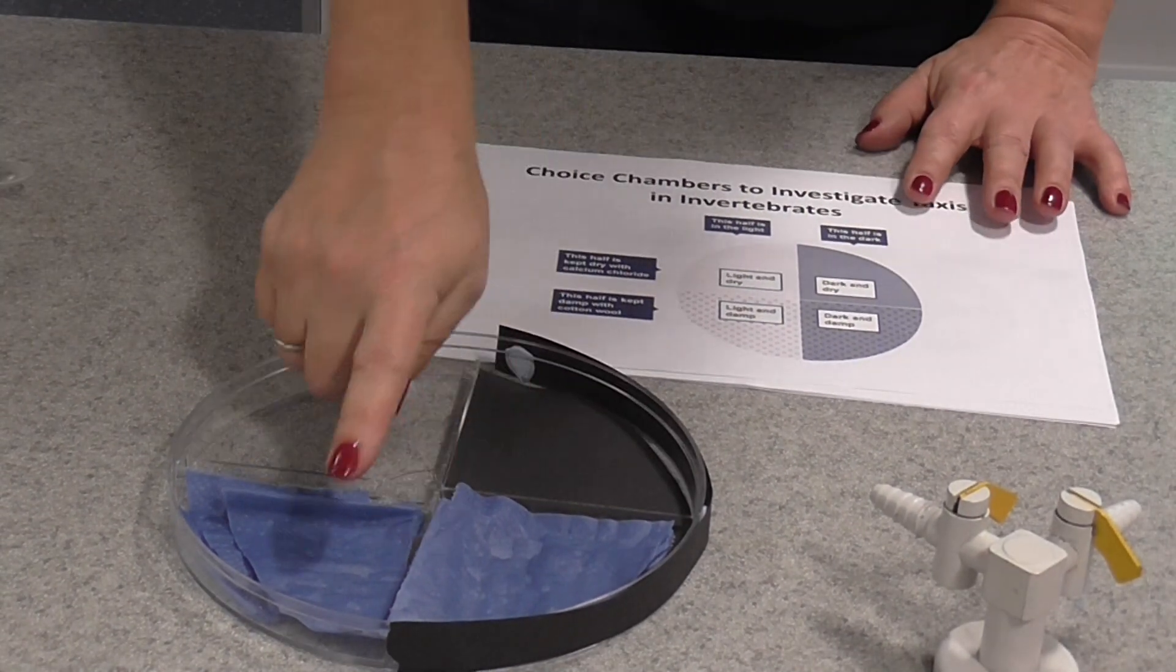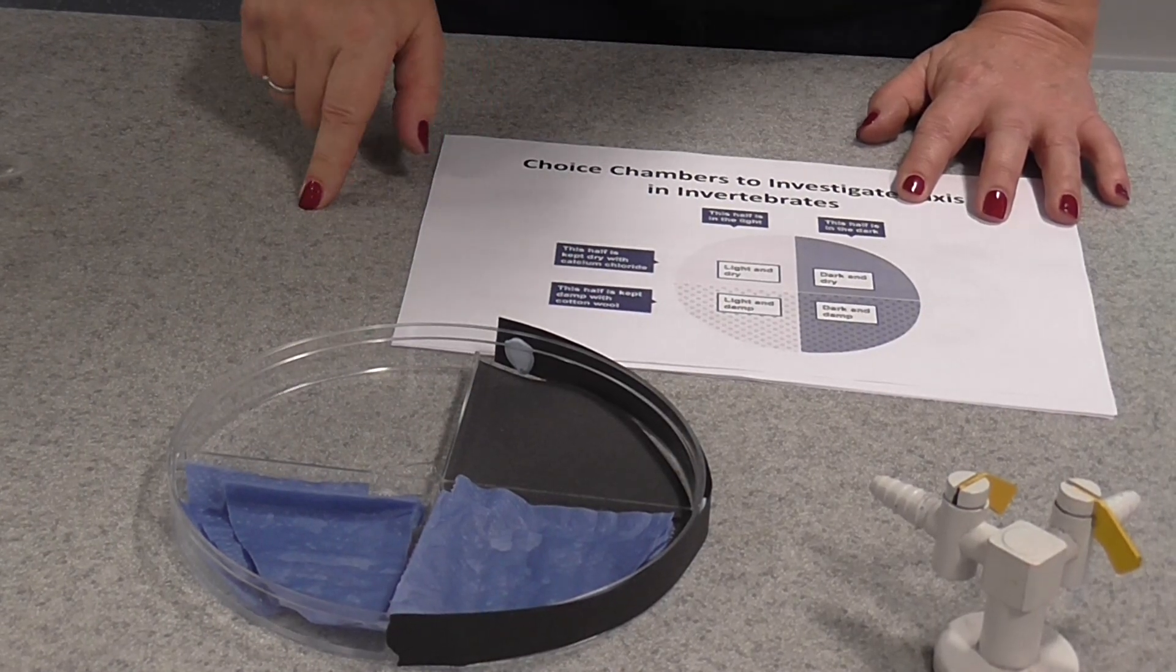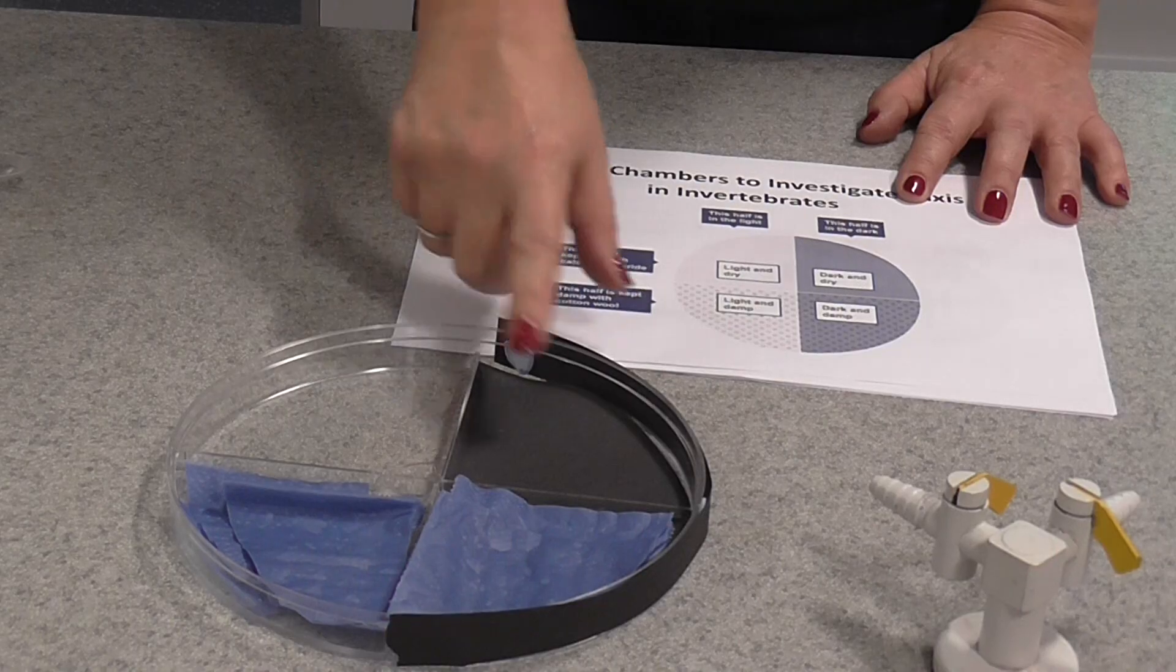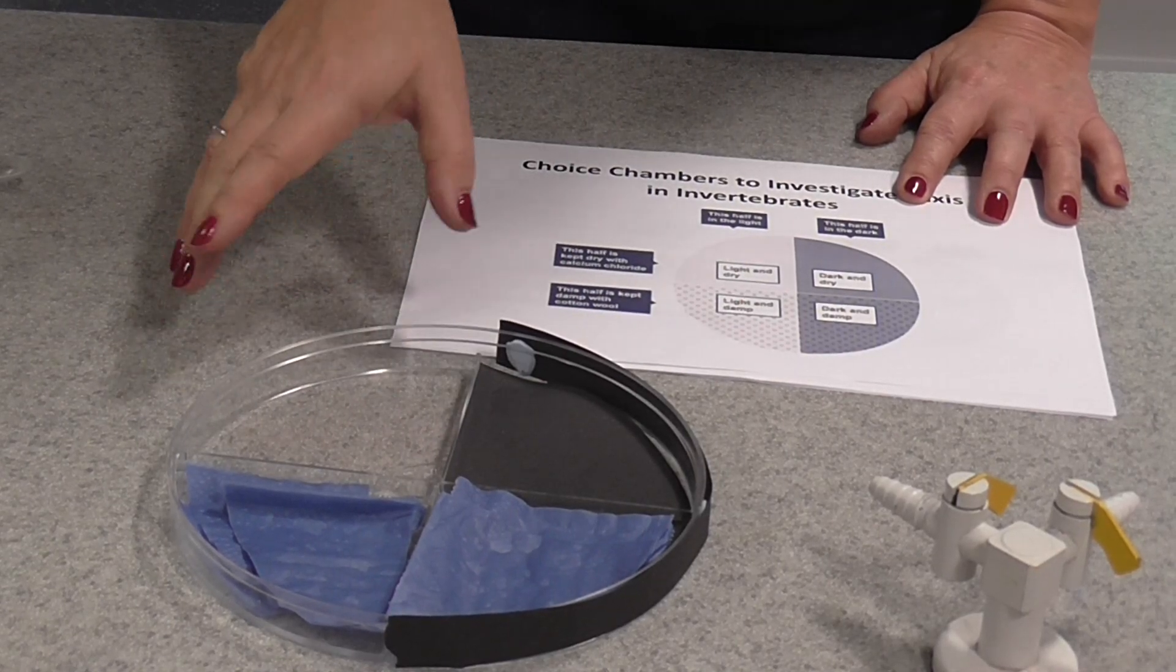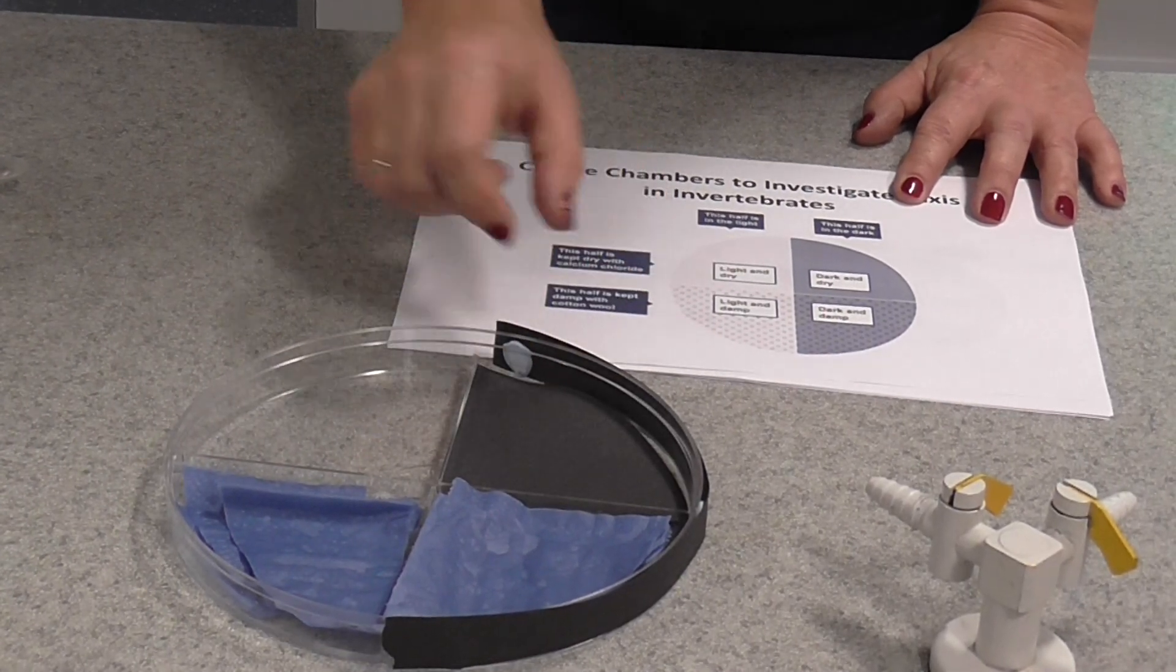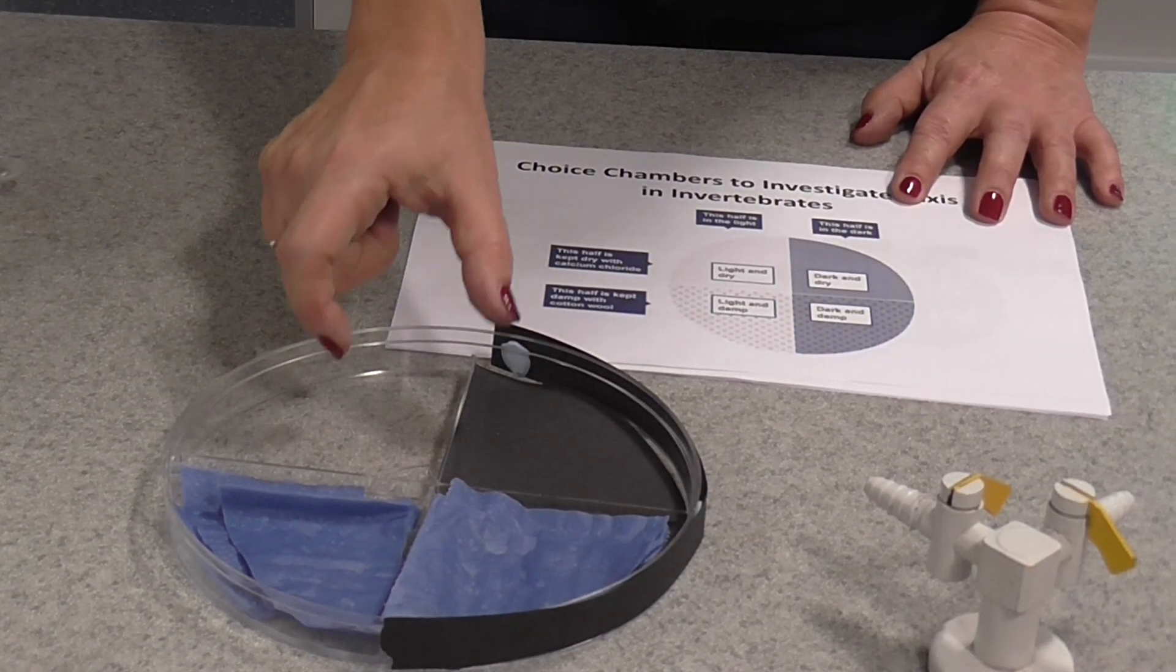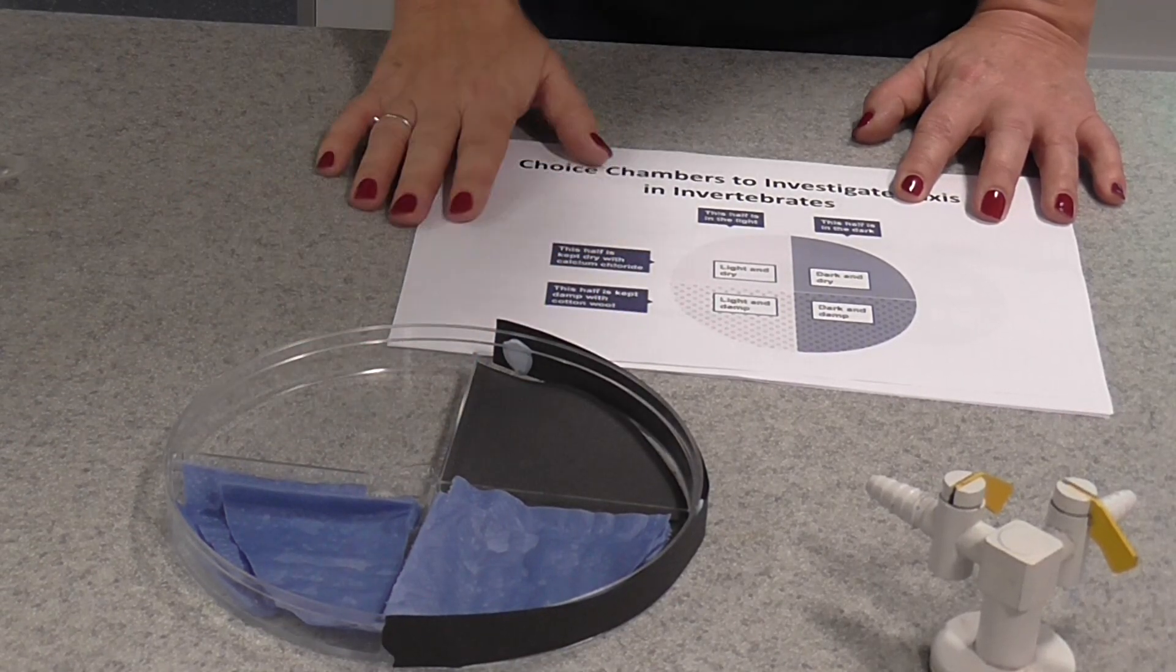I've created two damp sections by placing damp paper towel in the bottom there and two dry sections. In the dry sections, you can actually place some silica gel if you like to ensure that conditions are dry and you could even put something like cobalt chloride paper in there, which remains blue if conditions are dry, just to check the conditions. But I find this is not really necessary.